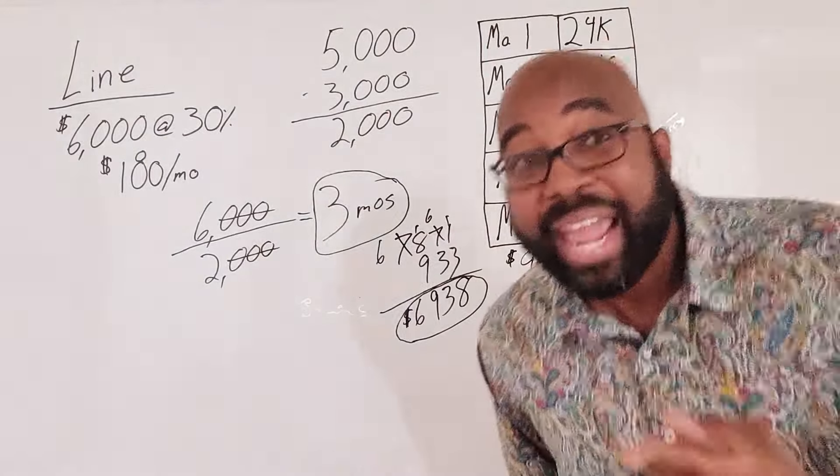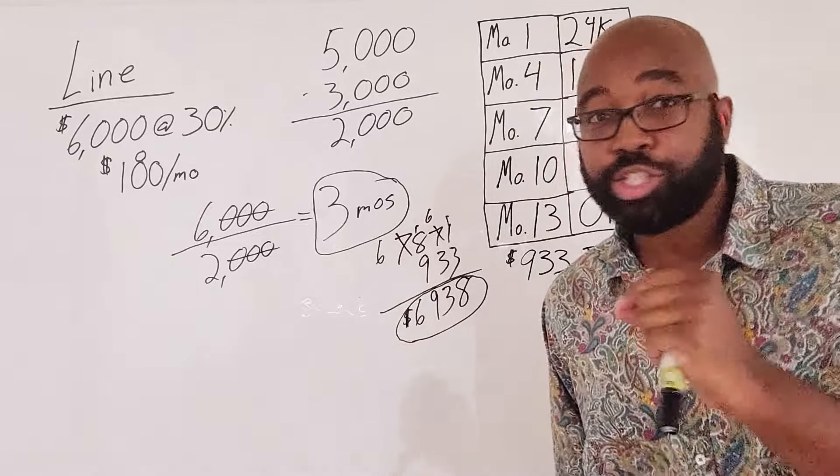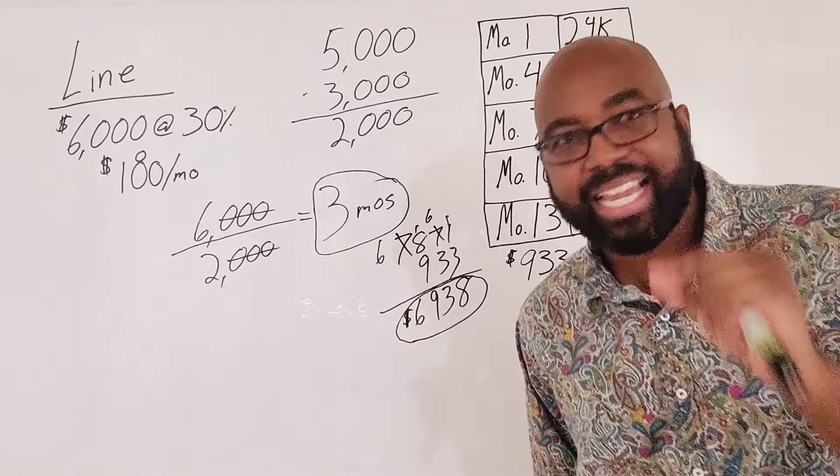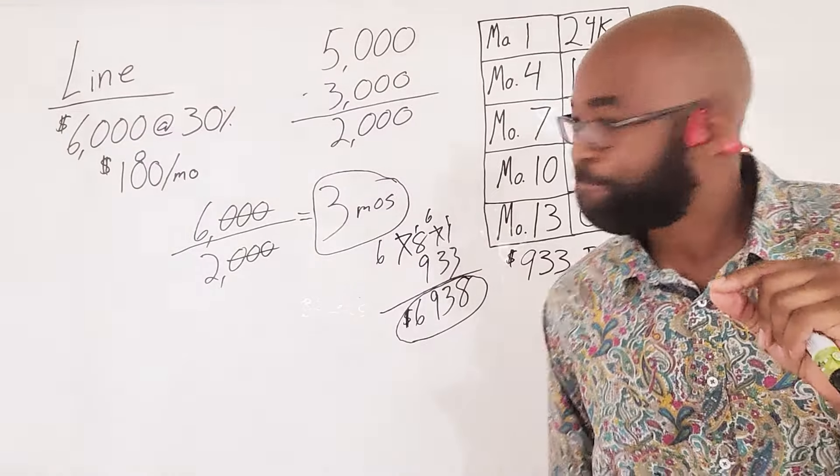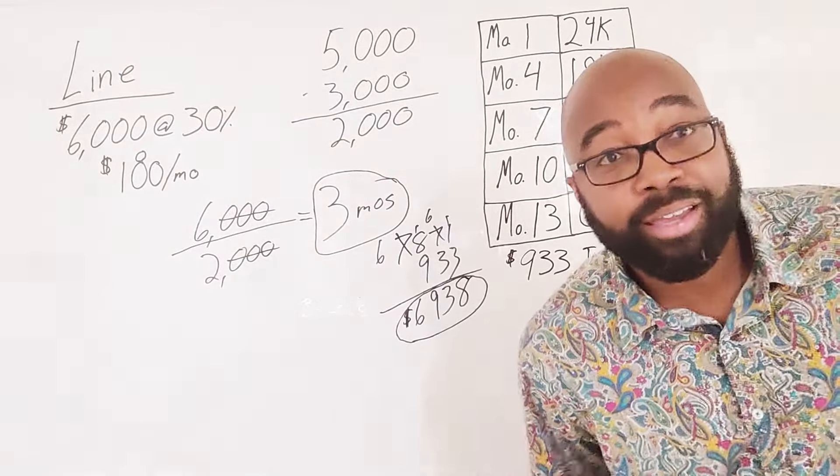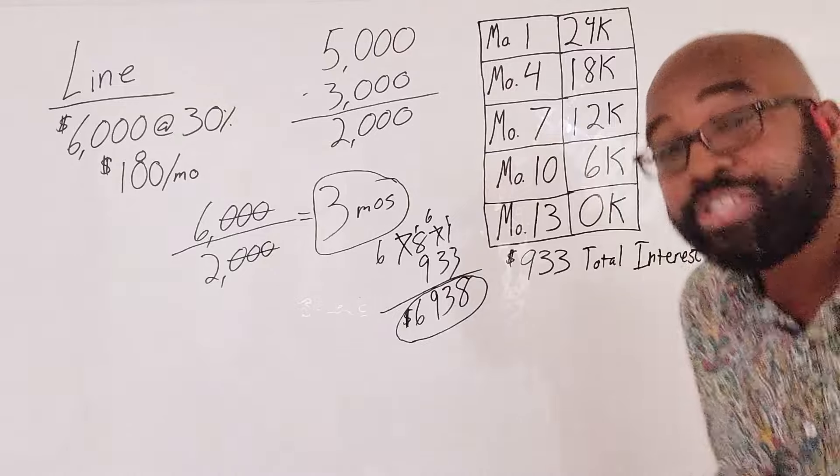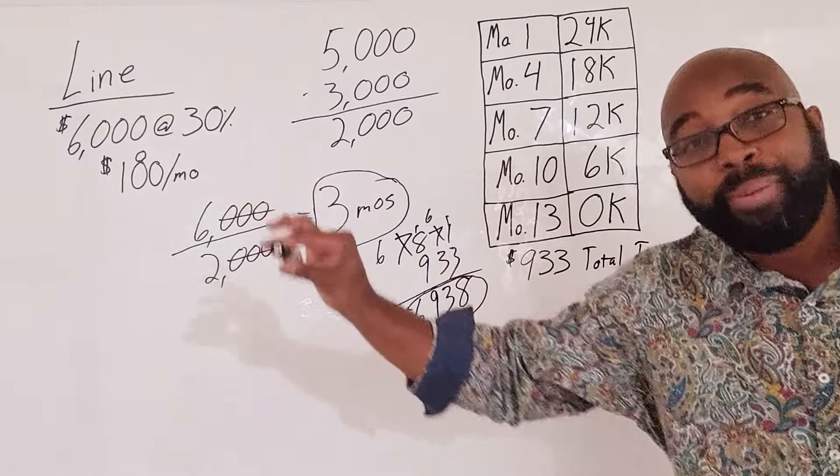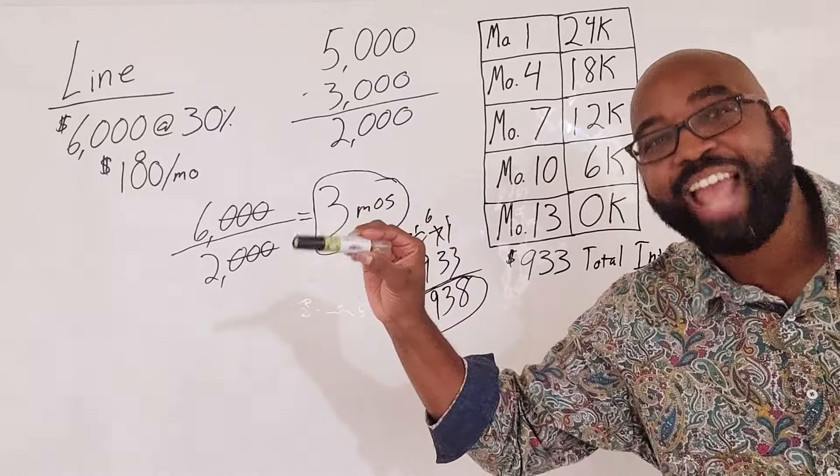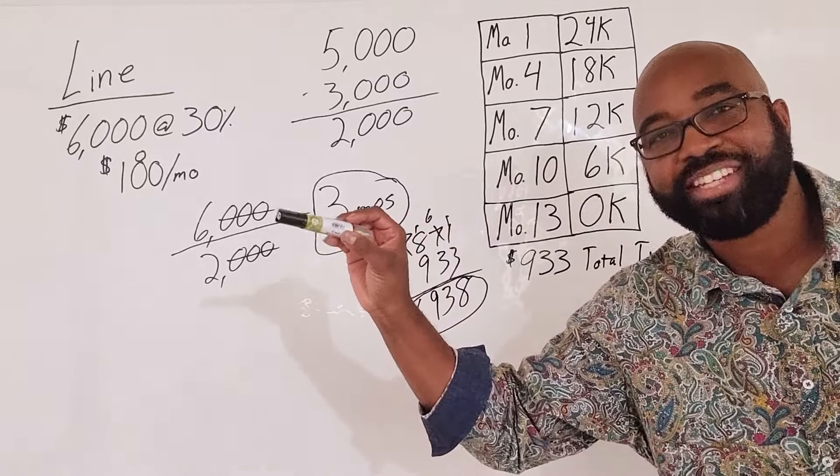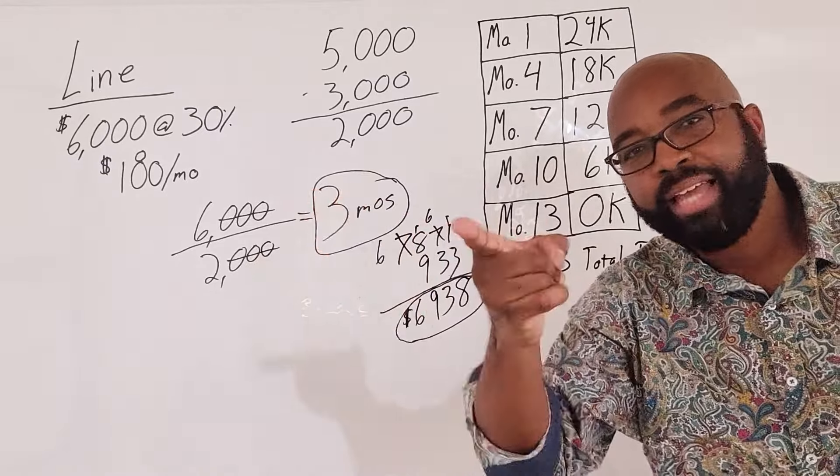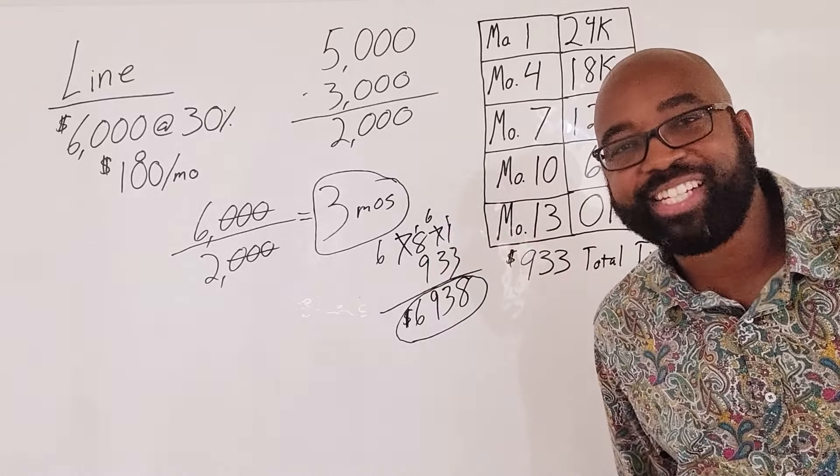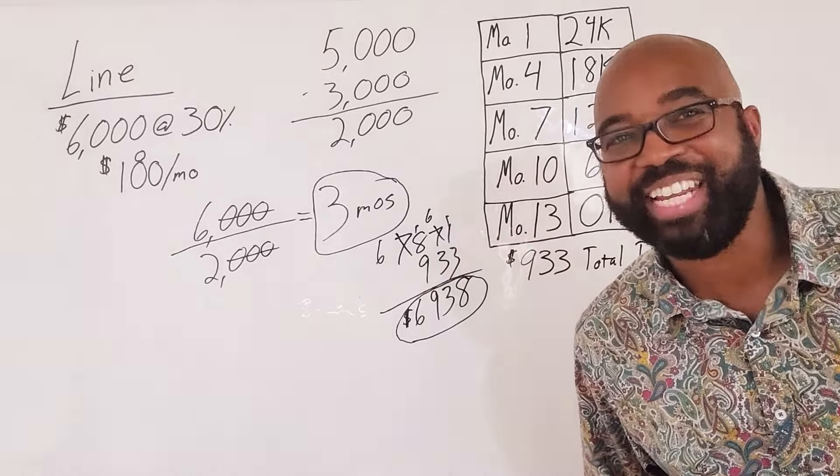When you're saving $6,938 in interest by doing things the non-bank way, you got to at least ask yourself, why haven't they told me about this? Because their way, you would have been paying $7,871, but the better way, you're paying only $933 in interest. And that's just one example. God bless you and we'll see you in another video.